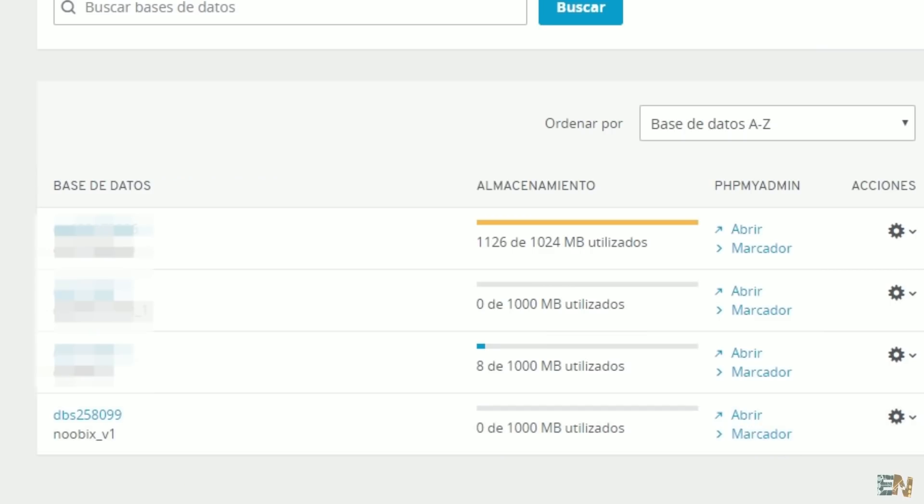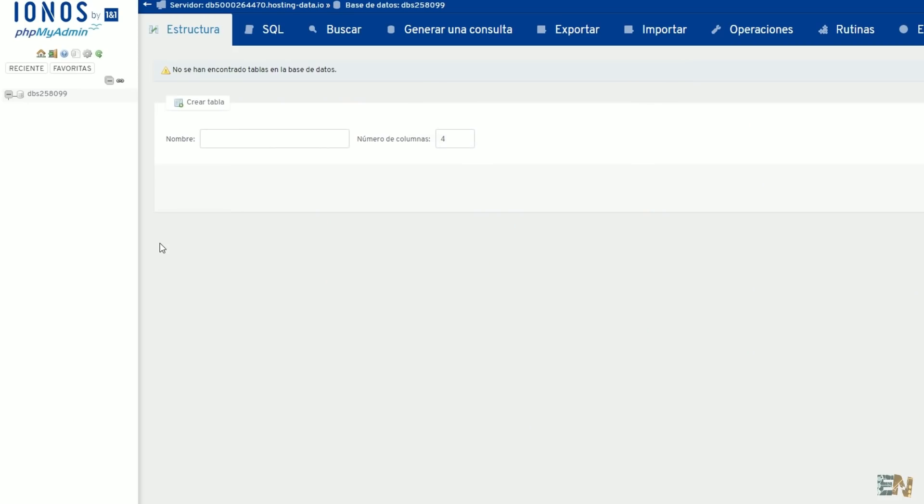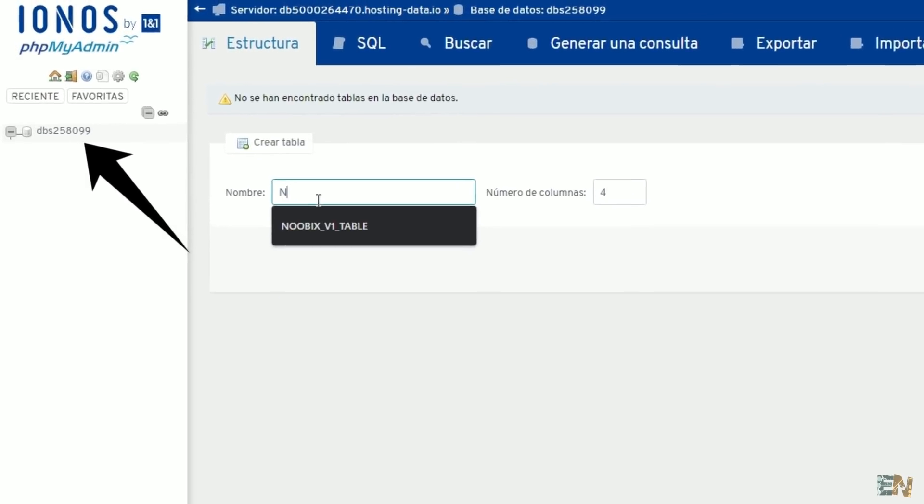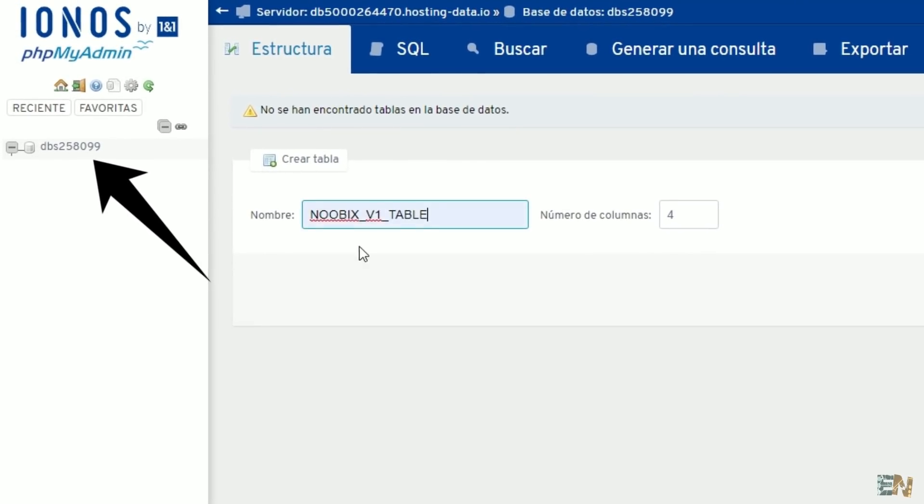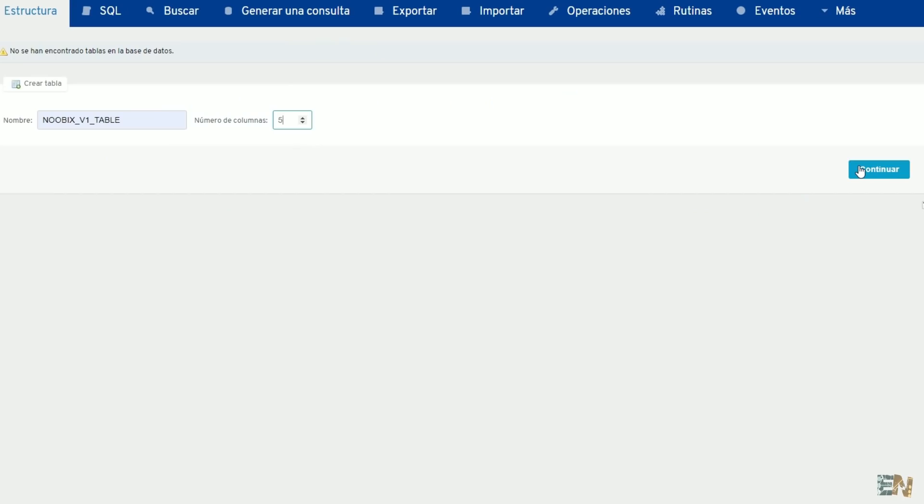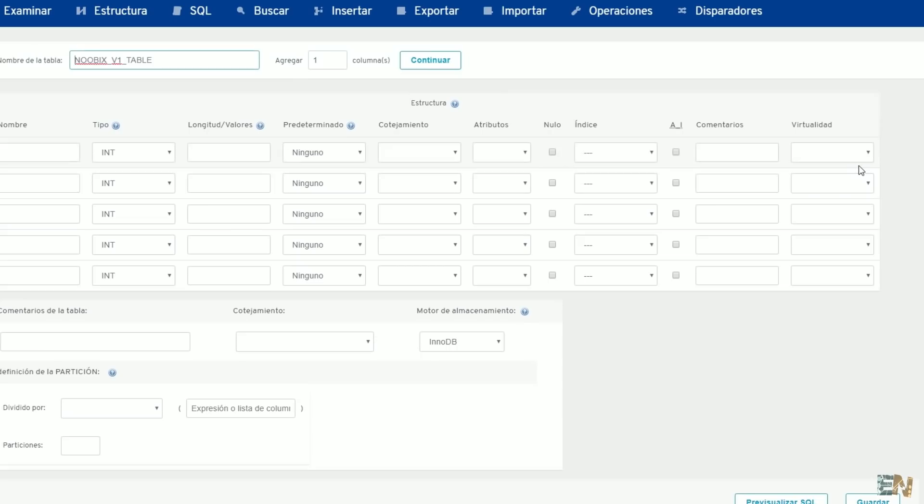Now open this database in phpMyAdmin. As you can see, the database is empty so we have no tables. So we have to create one. I name my table Noobix V1 table and select 5 columns. Click next and here we have to give names to our columns.